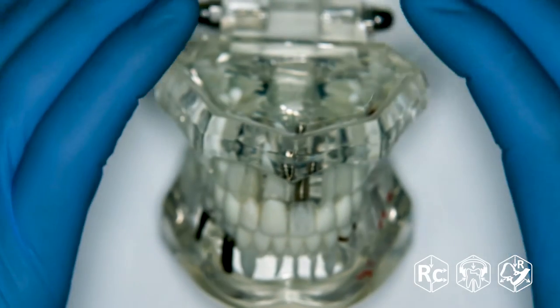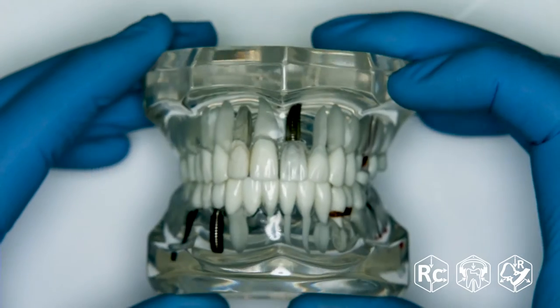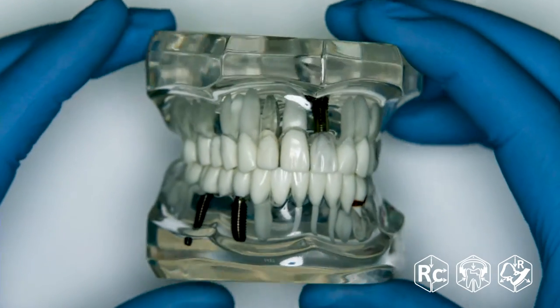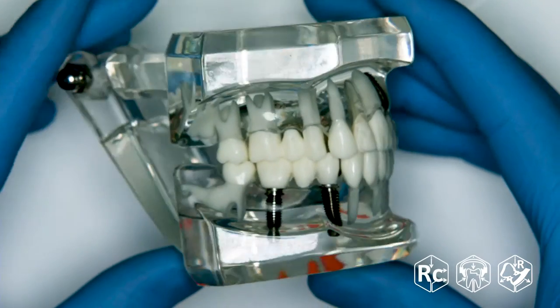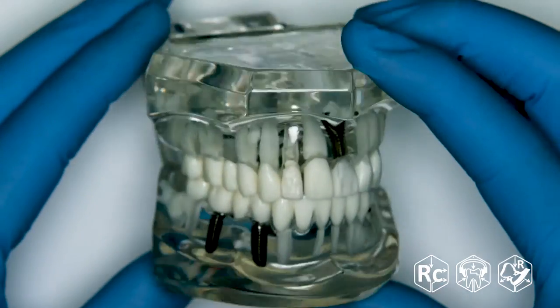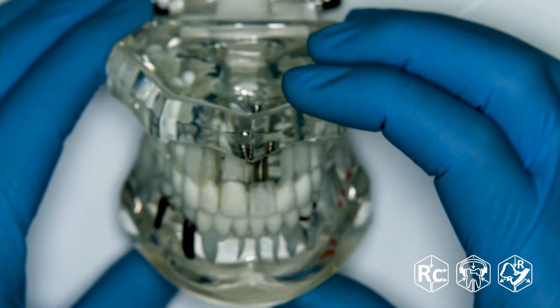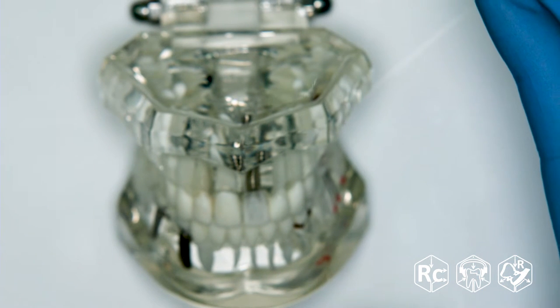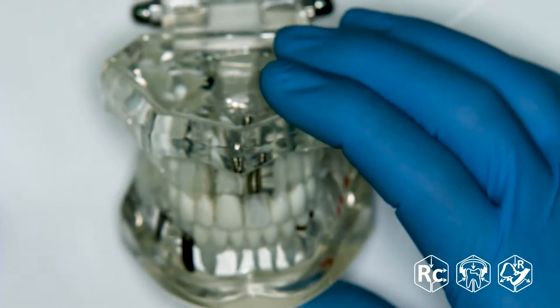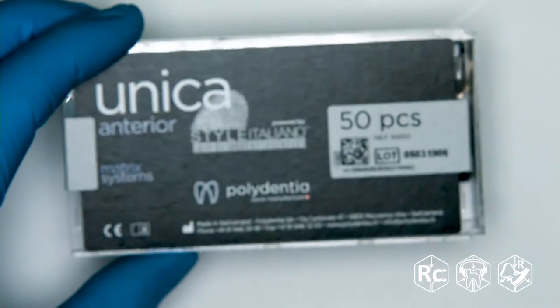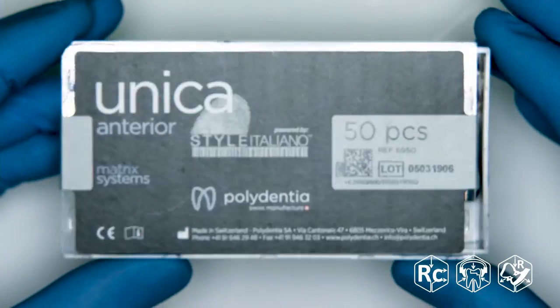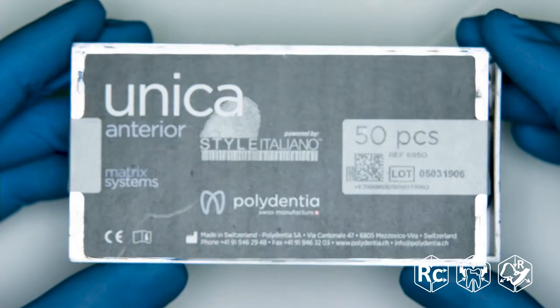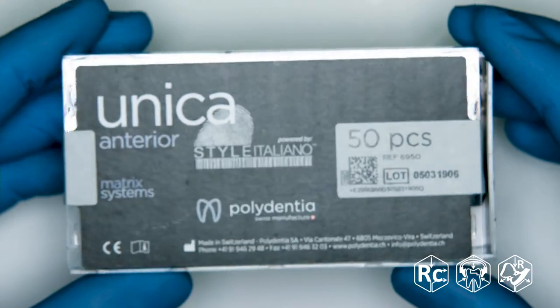Good afternoon, dear colleagues. Today we will have a very brief overview of two products for creating class II contact points. One of them is a ring for working with Unique matrices from the very well-known brand Style Italian, by the company Polydentia.